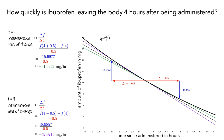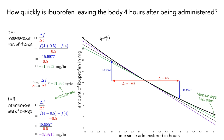We know that the instantaneous rate of change is equal to the slope of the tangent line, which is the limit as Δt approaches 0 of the average rates over these intervals. When we use intervals that go from 4 hours to larger amounts of time, the secant lines have negative slope and are less steep than the tangent line. So, negative 31.995 milligrams per hour would be greater than the limit of the slopes, making this an overestimate of the instantaneous rate of change. When we use intervals that go from 4 hours to smaller amounts of time, the secant lines have negative slope and are steeper than the tangent line. So, negative 37.971 milligrams per hour would be less than the limit, making this an underestimate. We can do better by using smaller intervals.